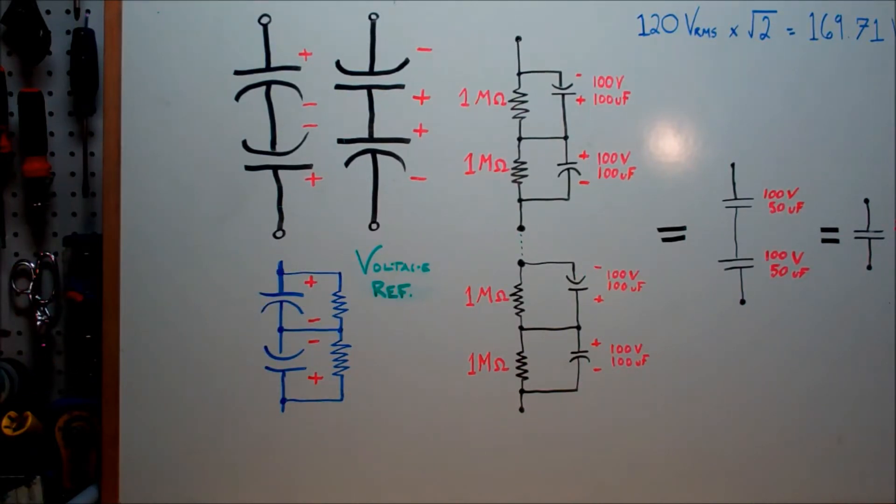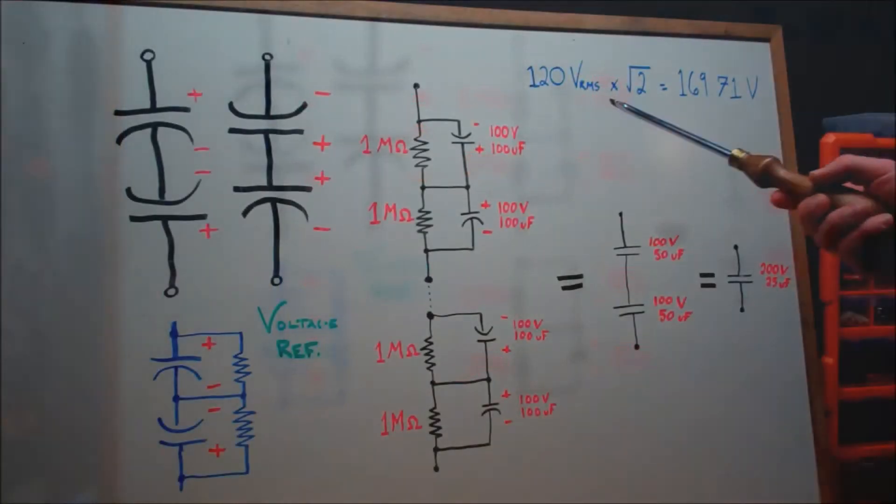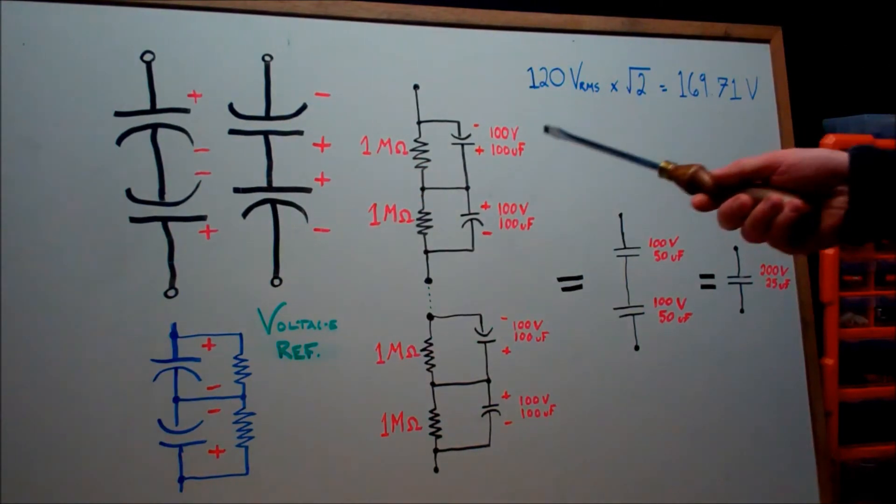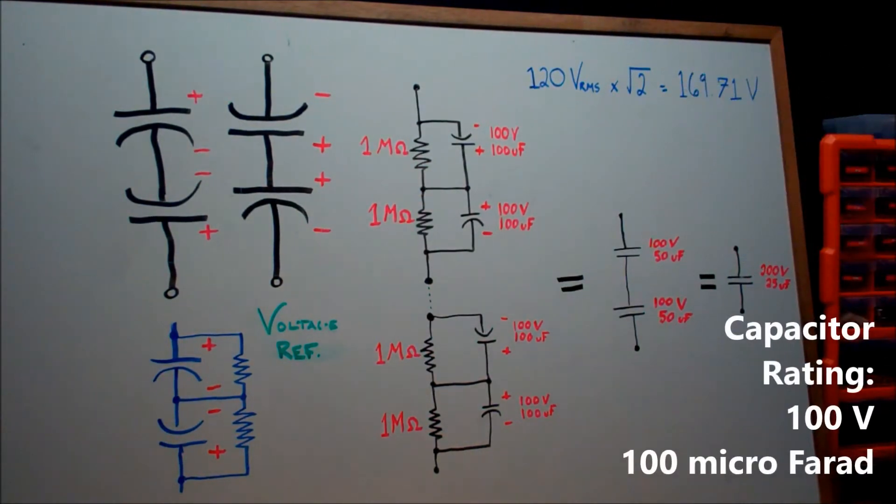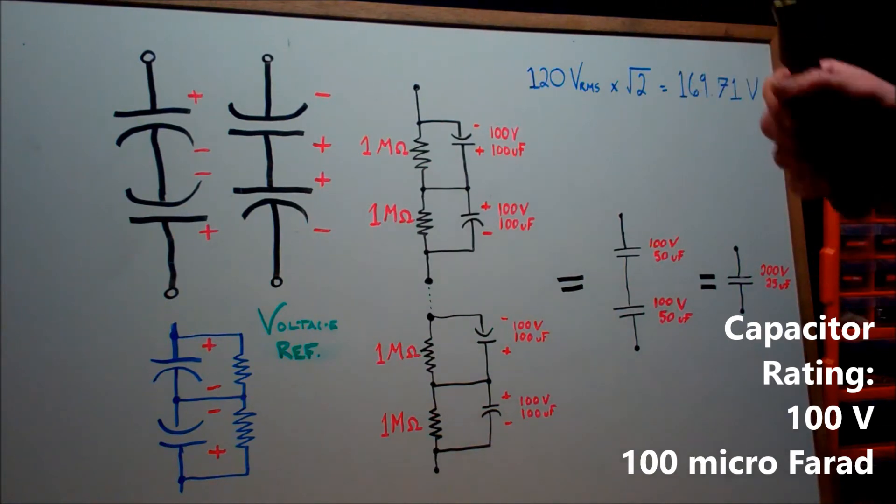Now there is a consequence to this design. You're going to lose half the capacitance rating for your capacitors. My capacitance rating here is 100 microfarads, and the maximum voltage that can be applied to a single electrolytic capacitor is 100 volts.